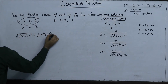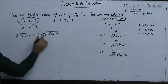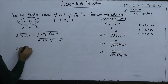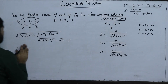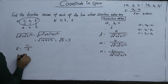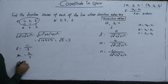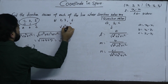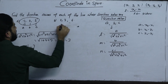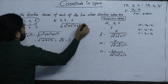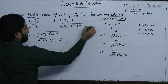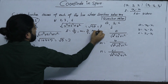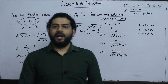For example: negative 1 squared plus 2 squared plus 2 squared equals 1 plus 4 plus 4, and the square root of 9 is 3. Then considering values such as negative 1 plus 4, with squares like 3 squared plus 2 squared plus 6 squared giving 9 plus 4 plus 36 equals 49, and the square root of 49 is 7. So the direction cosines are: L equals negative 1 over 7, 2 over 7, and negative 6 over 7. This is how you find direction cosines from direction ratios.